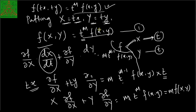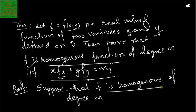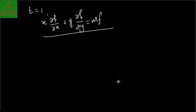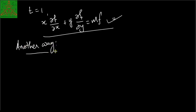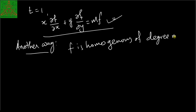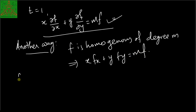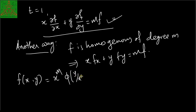We have shown that if f is homogeneous of degree m, then x·f_x + y·f_y = m·f. For the alternative proof of the same direction: since f is homogeneous of degree m in two variables, we can write f(x, y) = x^m · φ(y/x).